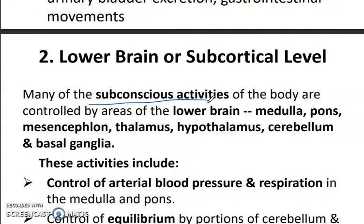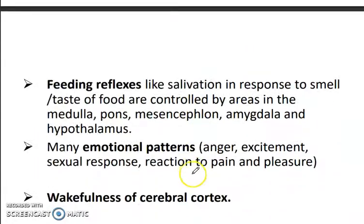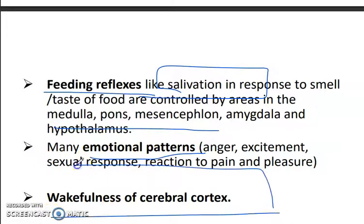The lower brain controls mostly subconscious activities. It includes the medulla, pons, mesencephalon, thalamus, and hypothalamus. Functions include controlling arterial blood pressure and respiration, controlling equilibrium via portions of the cerebellum, and controlling feeding reflexes. Emotional patterns and wakefulness of the cerebral cortex are also regulated here.